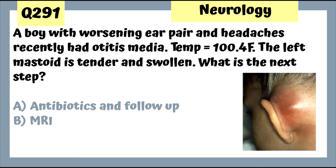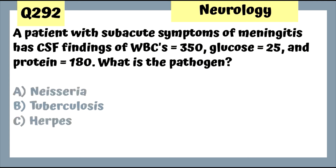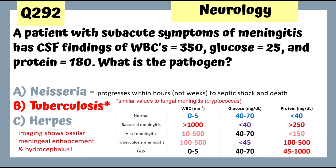Question 291: A boy with worsening ear pain and headaches after recent otitis media has a tender, swollen left mastoid — next step is MRI to look for abscess in the temporal lobe. Treat with antibiotics; surgery may be required to remove infective bone and drain the mastoid. Question 292: CSF parameters consistent with tuberculosis meningitis — in TB meningitis, white blood cells are not very elevated, but glucose is still low.